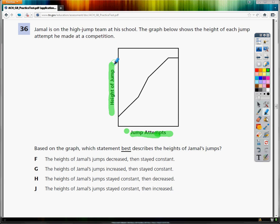Now, based on the graph, which statement best describes the heights of his jumps? Is it F, the heights of the jumps decreased then stayed constant, or G, the heights increased then stayed constant,